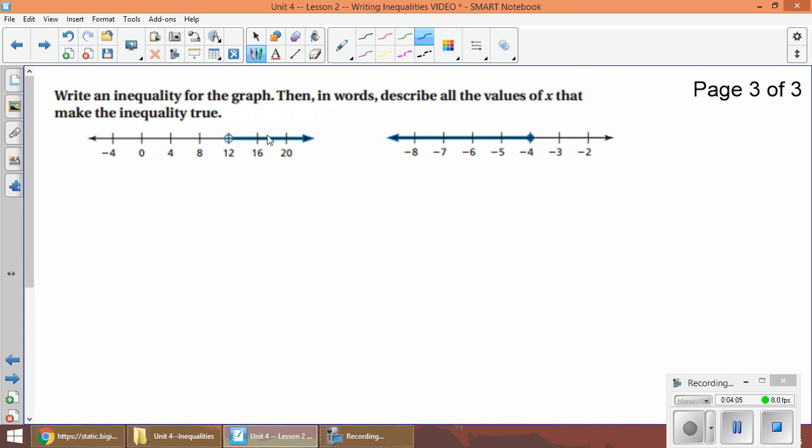So for, we'll call this example e. For example e, here's my x, my condition. What about my condition? I see an open circle and I see an arrow to the right. So open means it's either greater than or less than, and since my arrow is going to the right it's going to be greater, and my circle is over 12. So my x, my condition, is greater than 12.